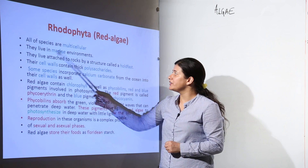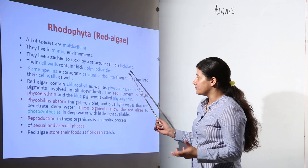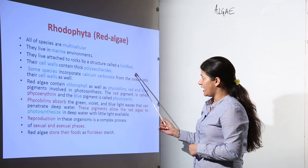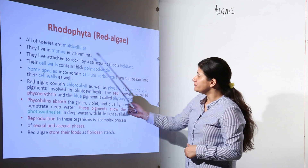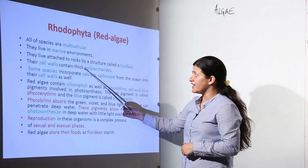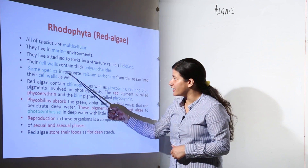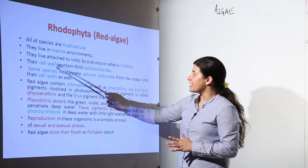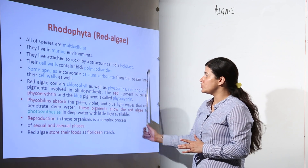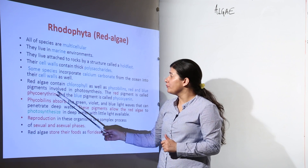Red algae live attached to rock by a structure called a Holdfast, similar to what we discussed earlier. The cell wall contains thick polysaccharides, and some species incorporate calcium carbonate from the ocean into their cell walls as well.